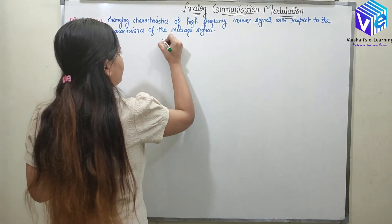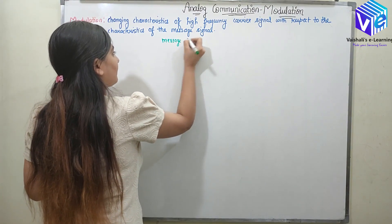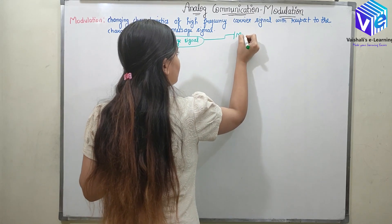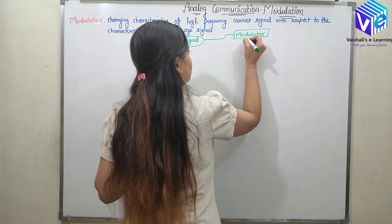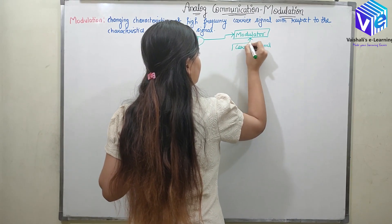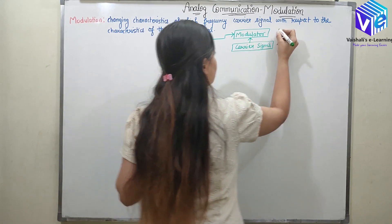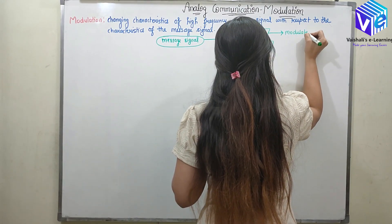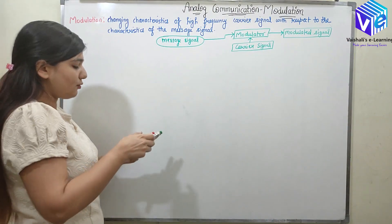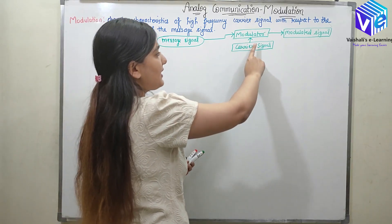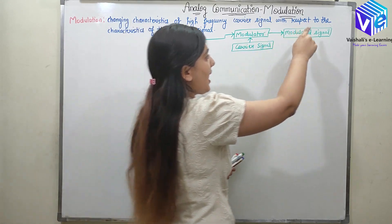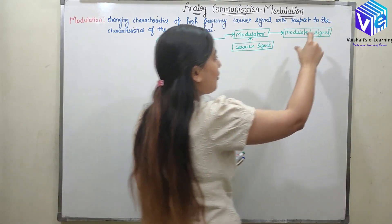If I talk about the block diagram: I have a message signal. I multiply it with the carrier signal with the help of a device which is called a modulator, and at the output I will get the modulated signal.